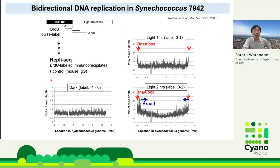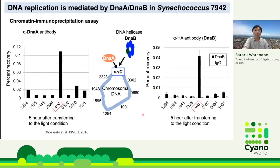This graph shows the result of REPRISEC analysis. Sequencing reads were mapped on the Synechococcus genome and read depth was normalized with the control. Although there were no marked changes in the dark culture, we detected a clear peak around the DnaA-box locus in the culture exposed to light for one hour. This peak was broadened in the two-hour culture, indicating that the DNA replication origin is located around the DnaA-box locus and proceeds bidirectionally. Chromatin immunoprecipitation, ChIP assay, using a DnaA antibody clearly indicated binding of DnaA to the DnaA-box cluster, and HA-tagged DnaB helicase also binds only to this region. Thus, we conclude this DnaA-box cluster is oriC in Synechococcus 7942.